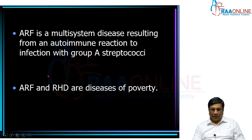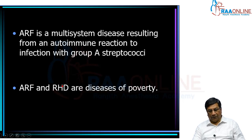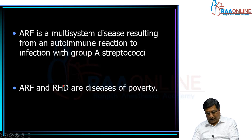Acute rheumatic fever and rheumatic heart disease are diseases of poverty. We have had a huge incidence of rheumatic fever and rheumatic heart disease in previous years. At this point in time, there is a significant reduction of acute rheumatic fever, and subsequently we are going to see less incidence and prevalence of rheumatic heart disease.